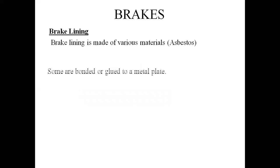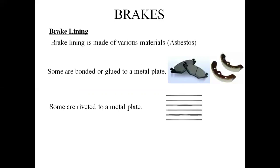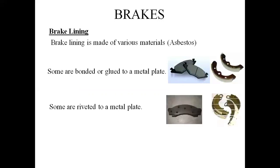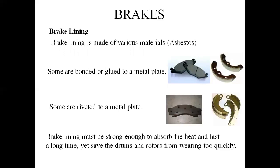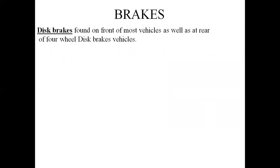Brake lining is made of various materials such as asbestos, bonded or glued onto a metal surface. Some are riveted. The brake lining material must be strong enough to absorb heat, last a long life, and protect the drum and rotor from wearing out quickly. Disc brakes are found on most front wheels of vehicles.